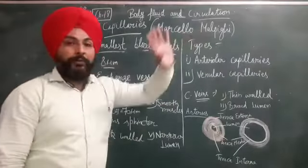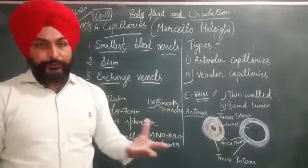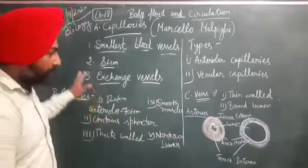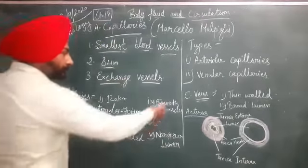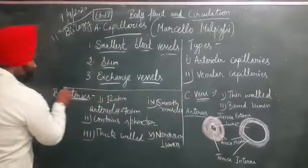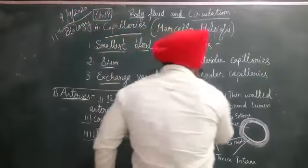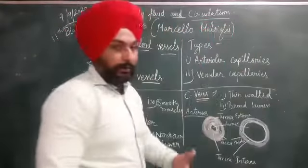Capillaries are also known as exchange vessels. Exchange vessels means these help to exchange material between the blood and body tissues. Arteries and veins are large blood vessels, so they are not directly in contact with any organ or body tissues. So these capillaries help in the transportation of blood from body tissue to the cells or body tissue to the blood vessels.